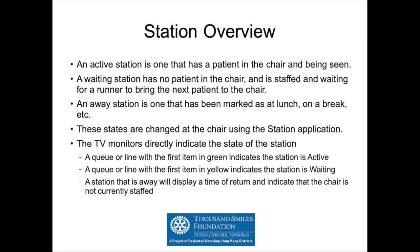To review: an active station is one that has a patient in a chair and is being seen on monitors. A waiting station has no patient in the chair but is staffed and waiting for a runner to bring the next patient. A station that's away is one marked as being at lunch or on a break. These states are directly changed at the chair using the station application. The monitors show your station's state — green means active, yellow means waiting, and if it's showing a return time, you're away.